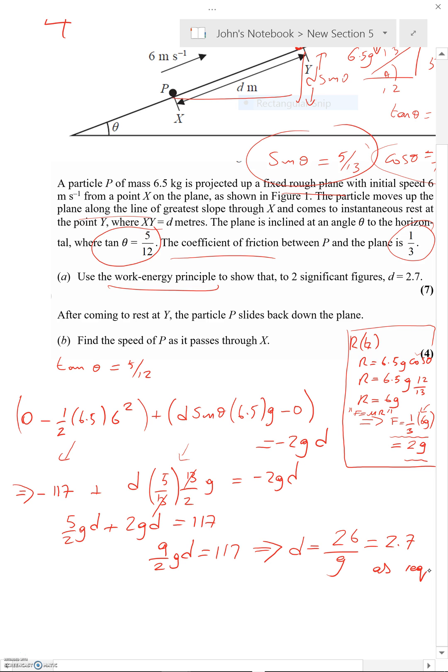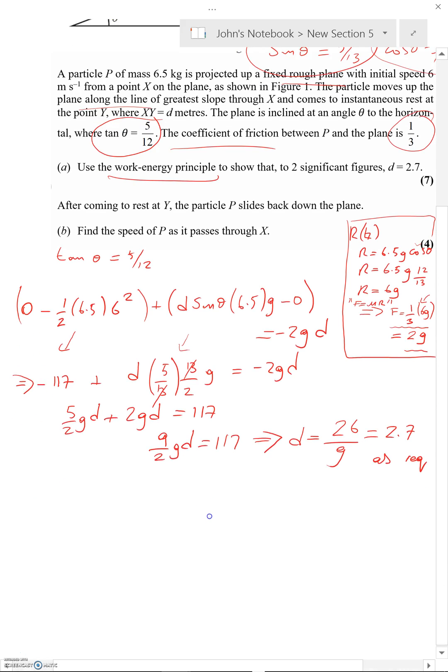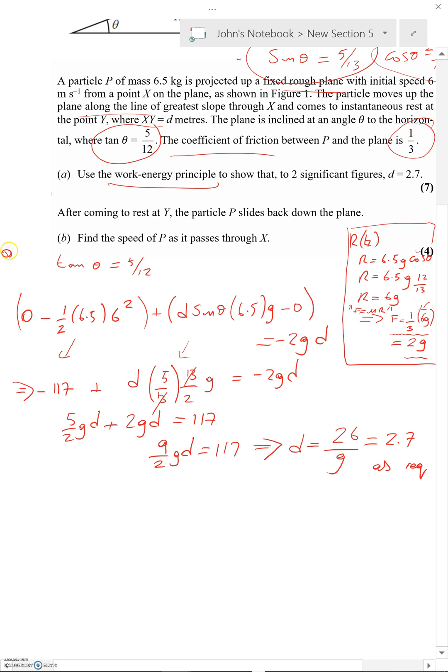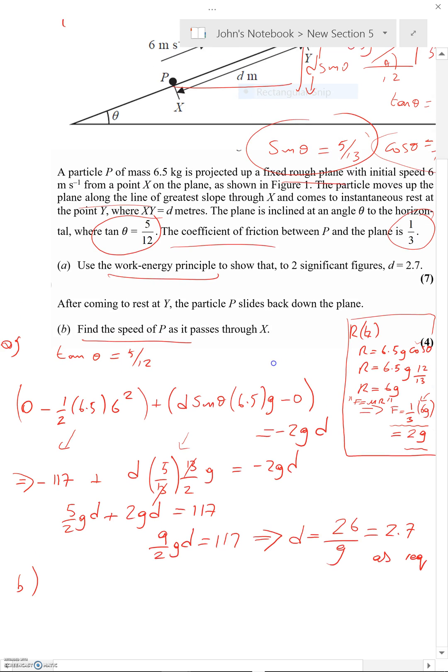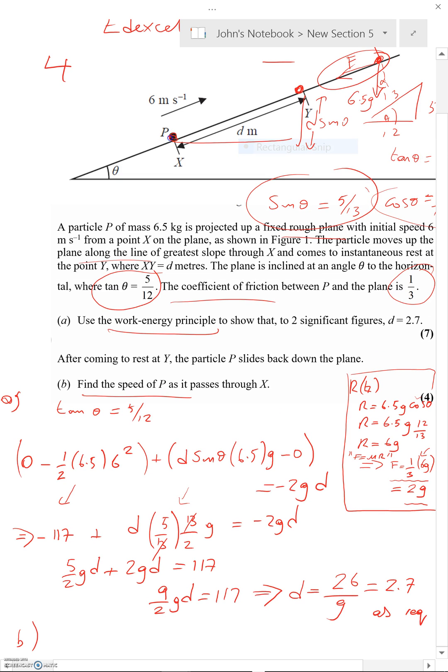Okay, I'm going to use the work-energy principle for part A. I'm going to use the work-energy principle for part B as well, although if you're not—if it's not your favorite thing, you can revert to suvat and F equals ma here. It says find the speed. Now it's coming down the slope, and we want the speed that it passes back at the distance X.